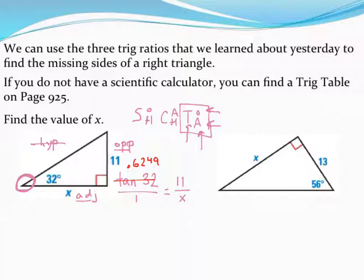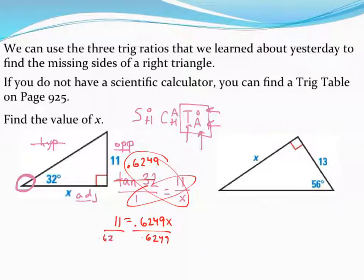Now I'm going to cross multiply. If I cross multiply this way, 11 times 1 is just 11. And when I cross multiply the other way, x times 0.6249 is 0.6249x. Now I want to solve for x, so I'm going to divide both sides by 0.6249. I end up with an x value that is approximately equal to, let's round to one decimal point, about 17.6 for that missing side.